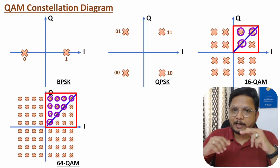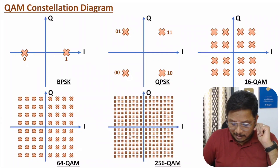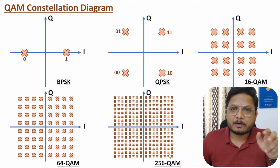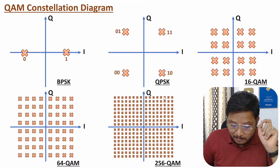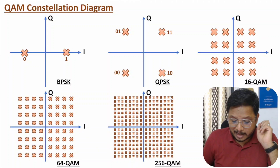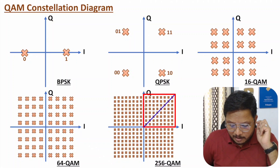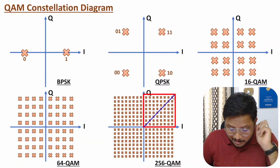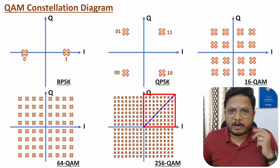For 256-QAM, bits per symbol: 2^n = 256, so n = 8 — each symbol carries 8 bits. To find amplitude levels, bisect one quadrant diagonally. In that single quadrant, there are 256/4 symbols, and after bisecting diagonally, the number of visible symbols along that diagonal gives the total number of amplitude levels.